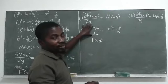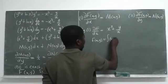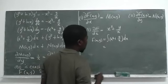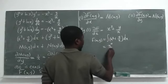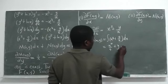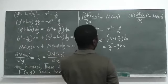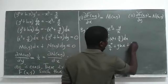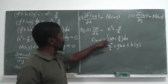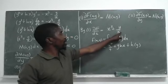To determine F, we integrate both sides with respect to x. The integral of x cubed gives x to the power 4 over 4, and the integral of y over x with respect to x gives y times ln(x), since y is a constant. We add a function h(y) as the constant of integration, because differentiating with respect to x would give zero for h(y).